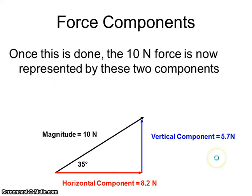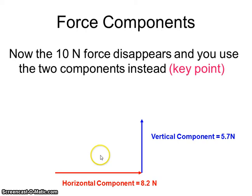That's the key. So when we use our trigonometry, we can figure out what these two parts are doing to substitute in for that 10 newtons. So the key point now is once you get these two values, that 10 disappears. You don't use that 10 anymore. You're going to use the 8.2 horizontally and the 5.7 vertically.